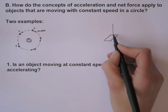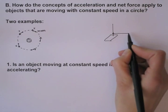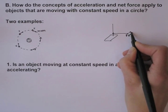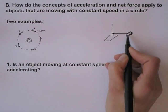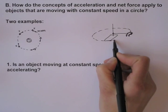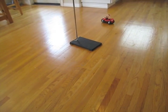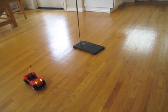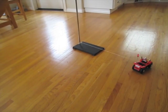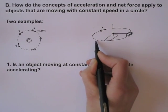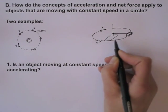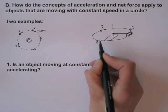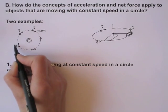For another example, let's suppose we have a ring stand with a string attached to a little cart that has a little motor. We turn that on and it goes around in a circle. When the cart is at various positions around the circle, we can draw velocity vectors — these are all velocity vectors, and they should have arrows above the symbol.